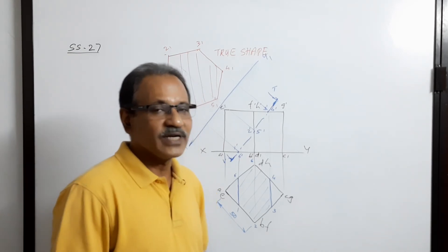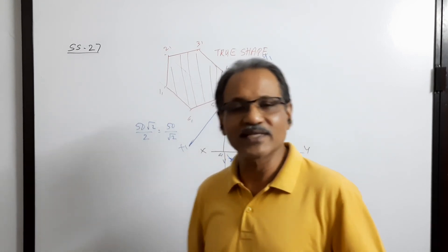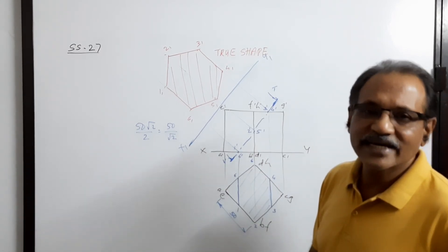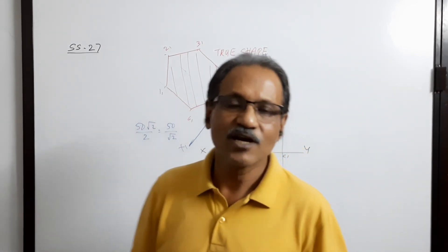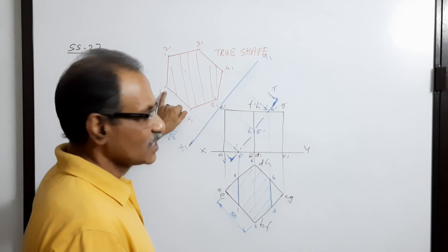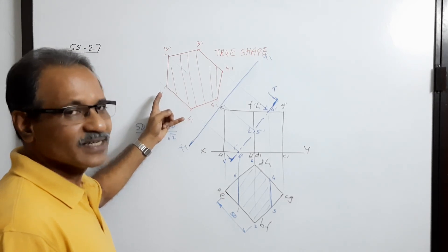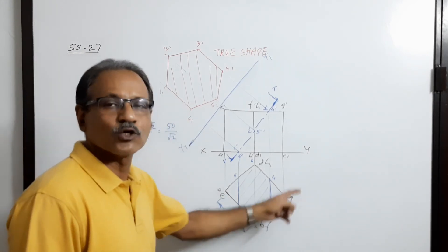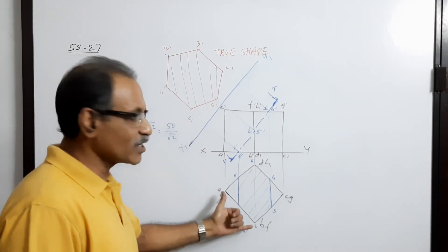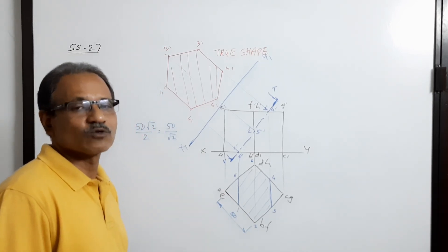There are many other cutting plane positions possible in this cube. This indicates scope for indirect questions. For example, you can be given the side of the hexagon without being given the side of the cube. If the side of the hexagon is given — say 30 — then multiplying by √2 gives the side of the cube. So the side of the cube would be 30√2.